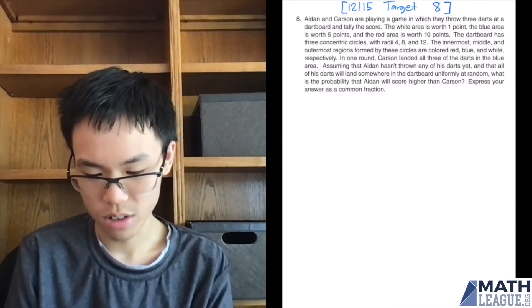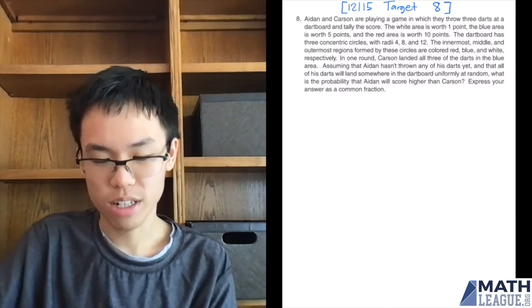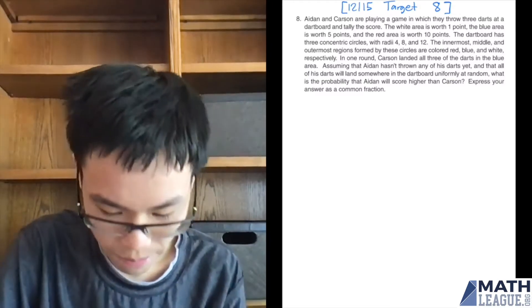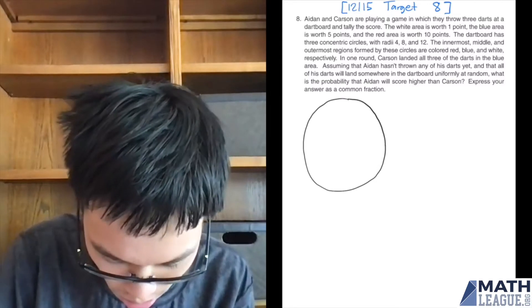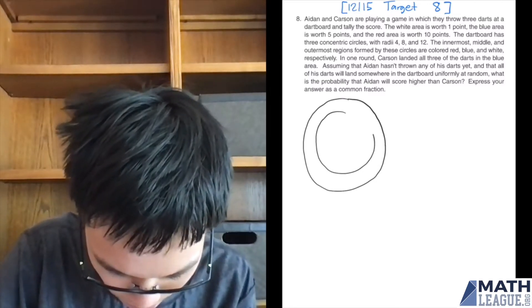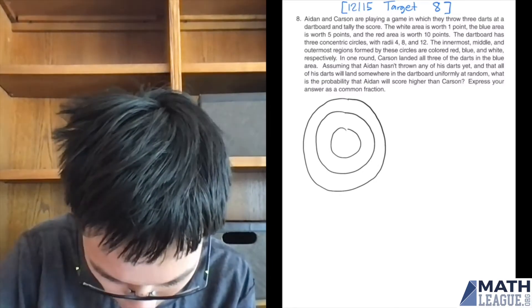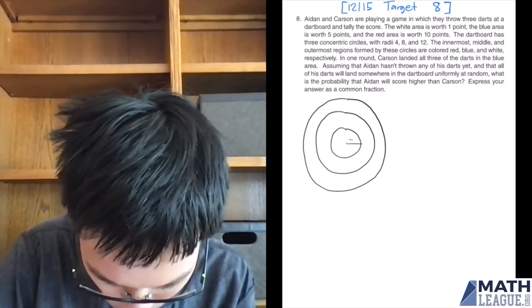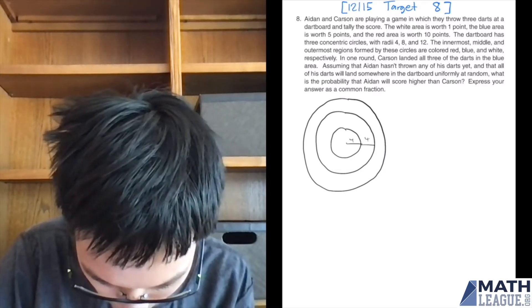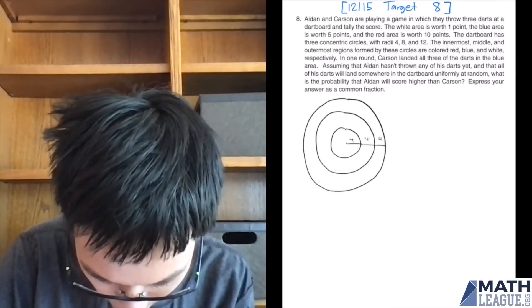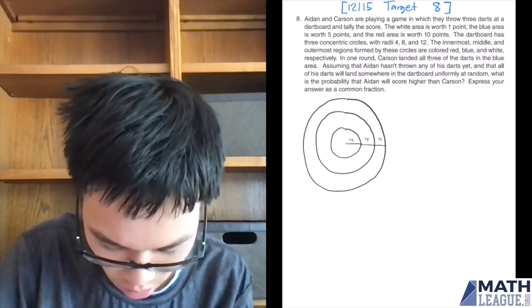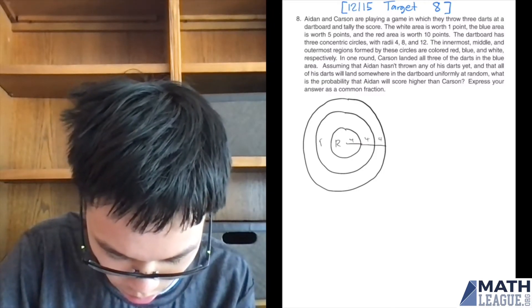I also see a lot of circle stuff. Might as well draw a diagram so I know what's going on. So three concentric circles - concentric basically means same center. One radius 4, one radius 8, one radius 12. Distance between these edges is 4. Also time to label the regions.